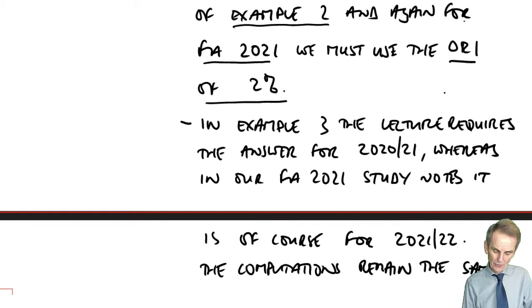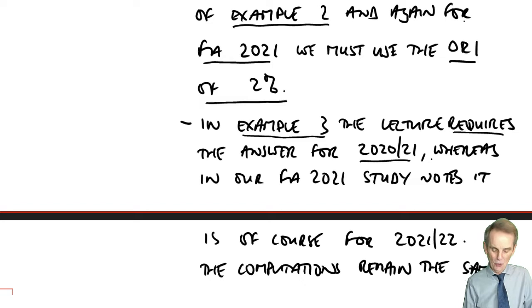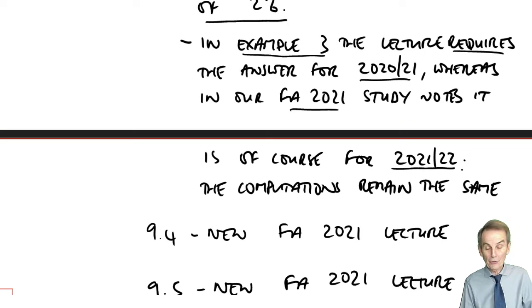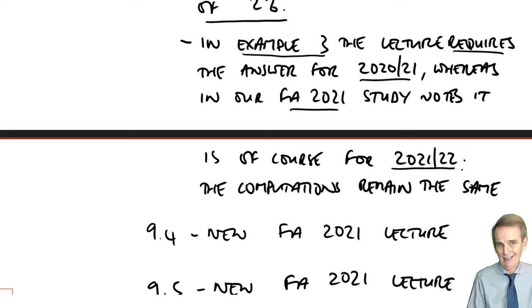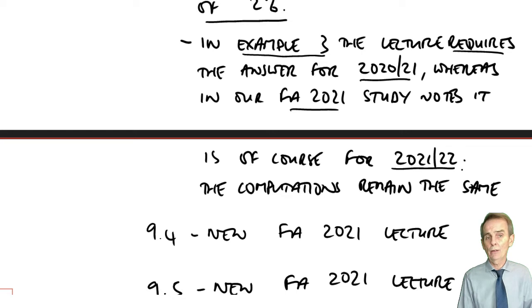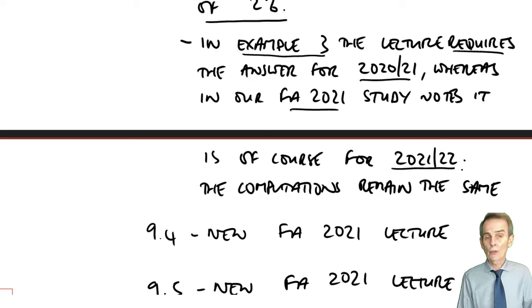In example three within lecture 9.3, the lecture requires the answer for 20-21, whereas of course we are working with our FA 2021 study notes and want 21-22. But the computations remain the same — there's no difference in the calculations you do, it's just a different tax year. The lectures show 20-21; our notes show what we need to do it for, which is 21-22.